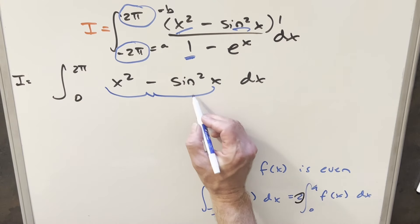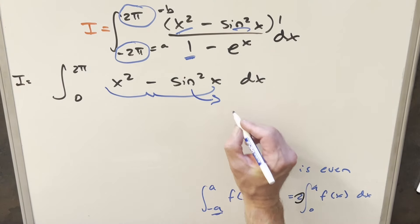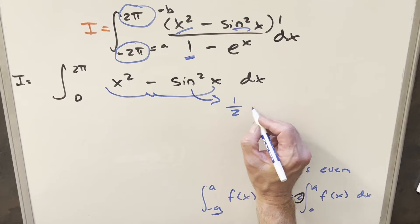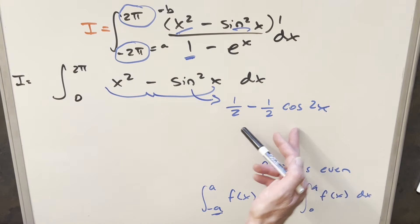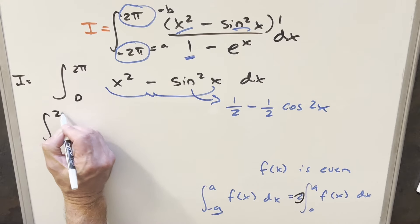And then from here, I'm almost ready to integrate, but I just want to use a formula to reduce this sin²x. I can use the formula and write this like 1/2 - (1/2)cos(2x). And then when we do this, now everything is going to be easy to integrate.